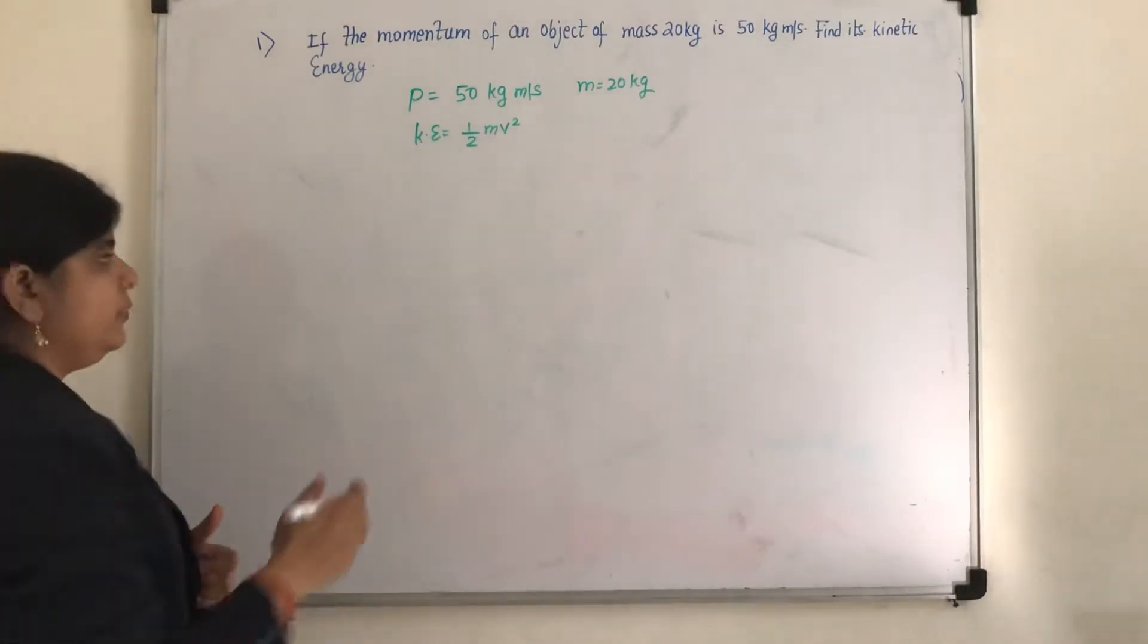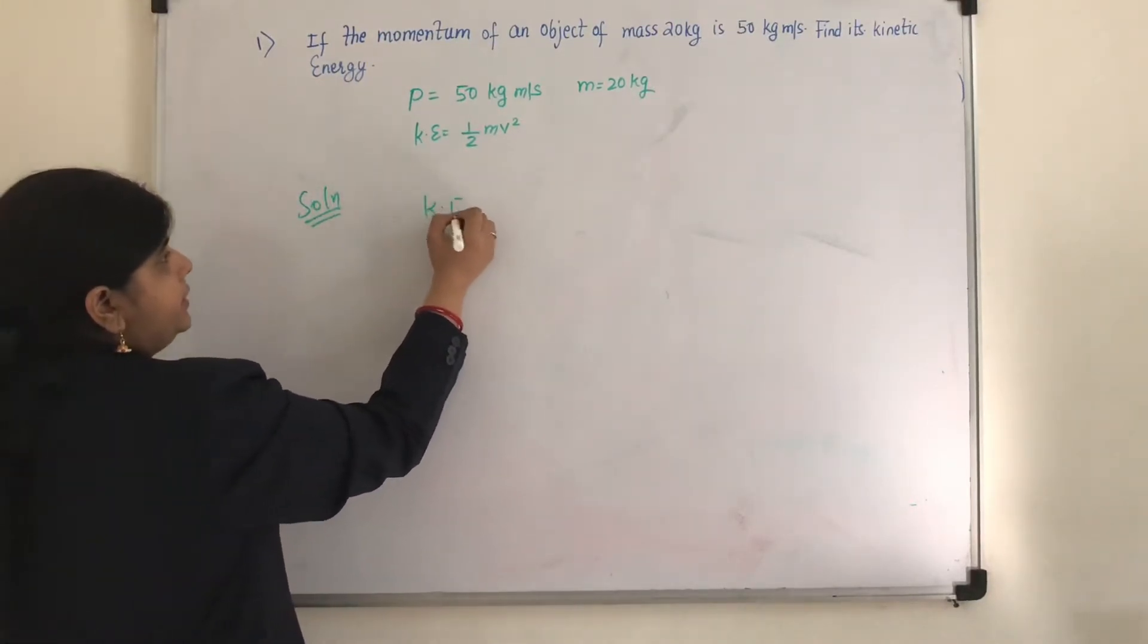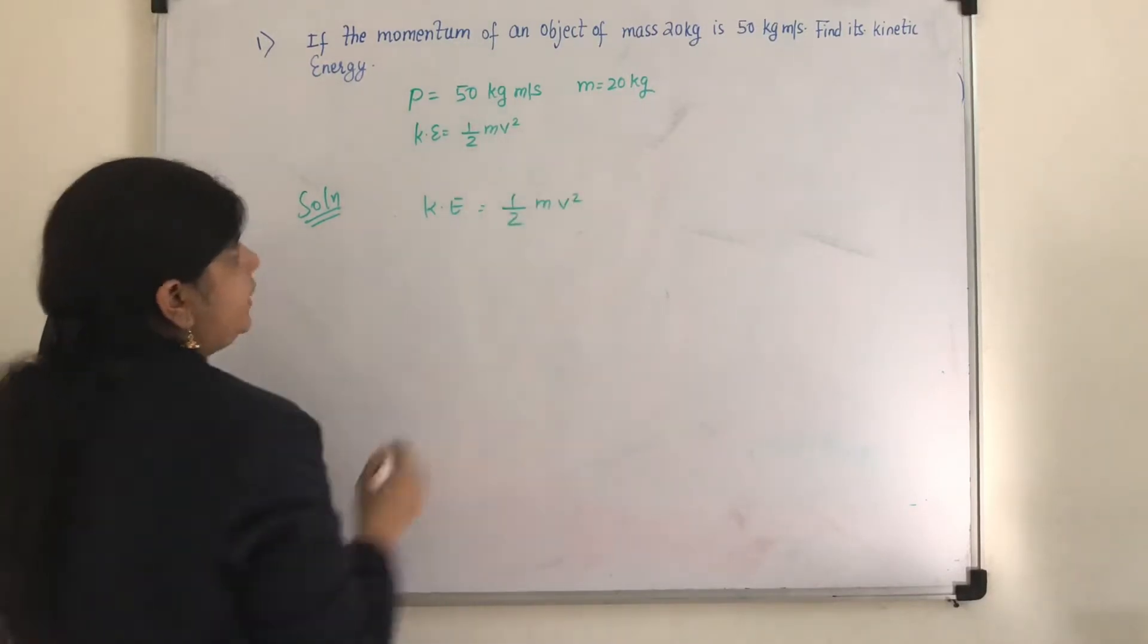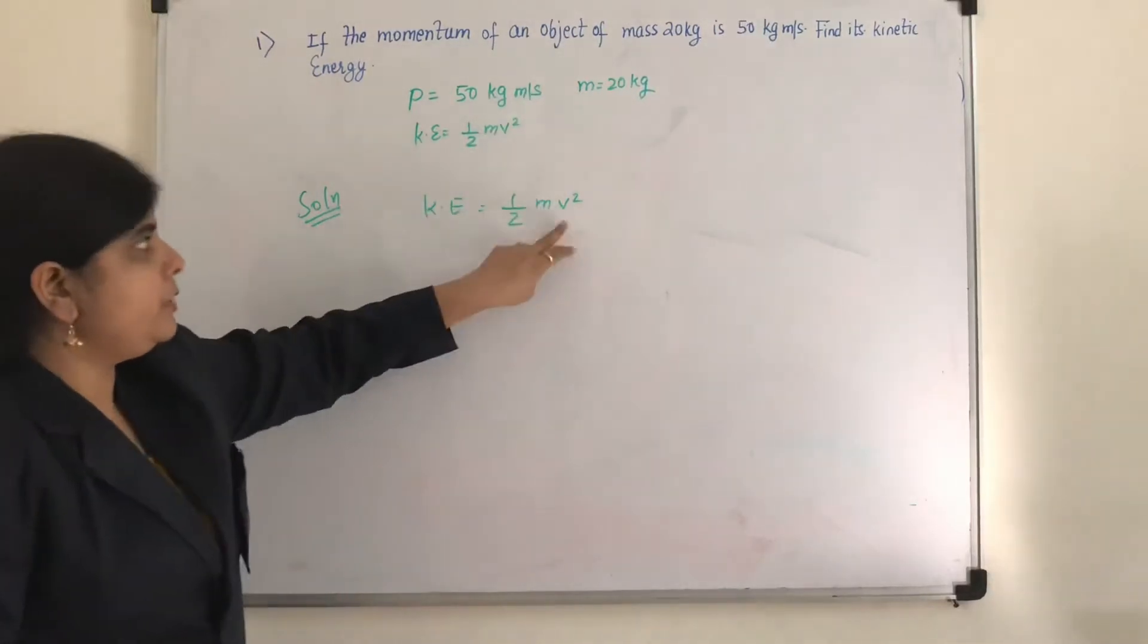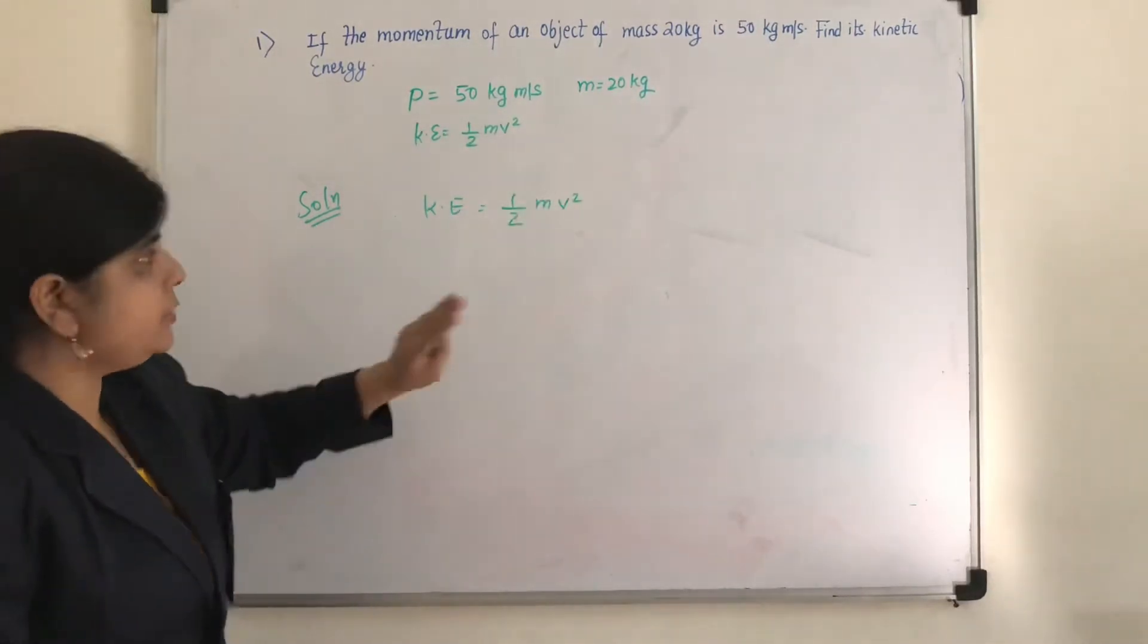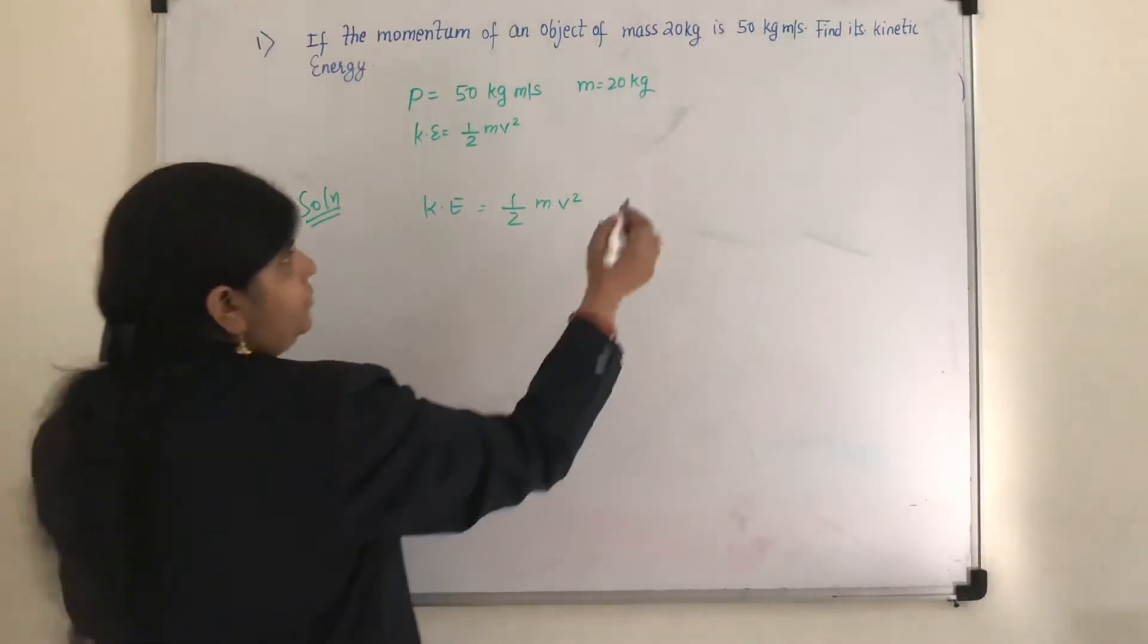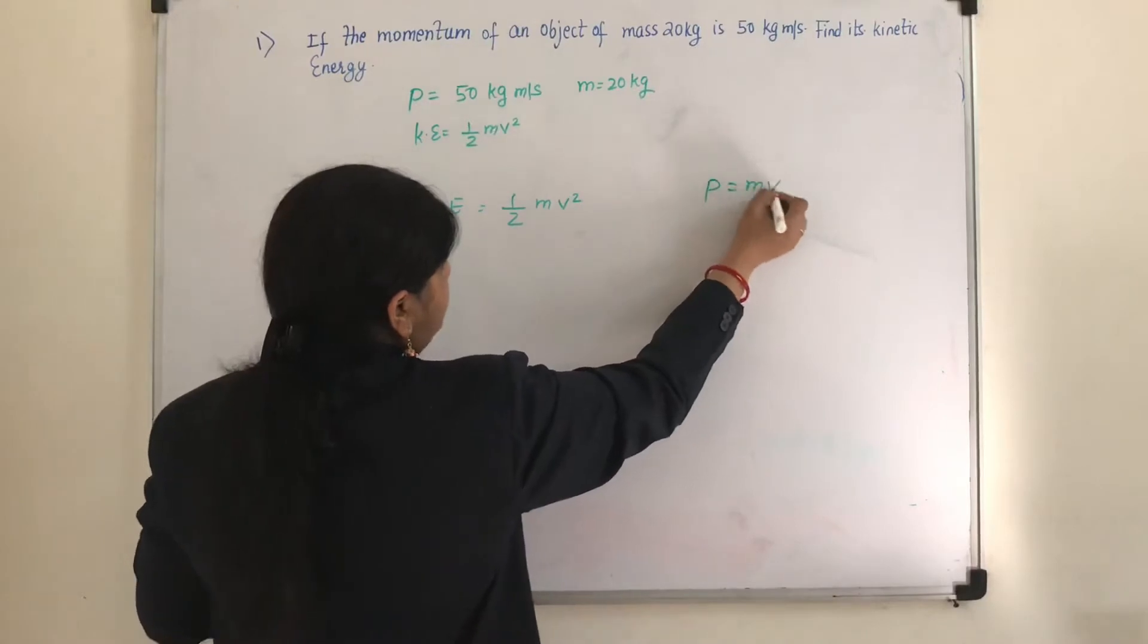Now what is the formula for kinetic energy? So kinetic energy is half mv square. Mass I know but velocity I do not know. Instead of velocity what is given? Momentum. So you know that momentum means P is equal to m into v.